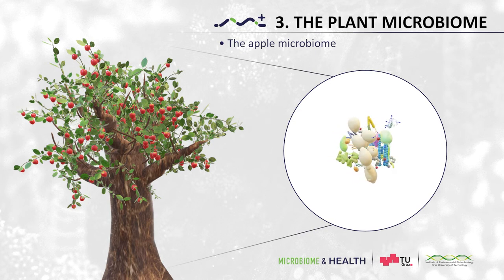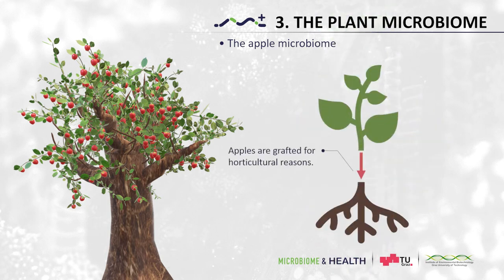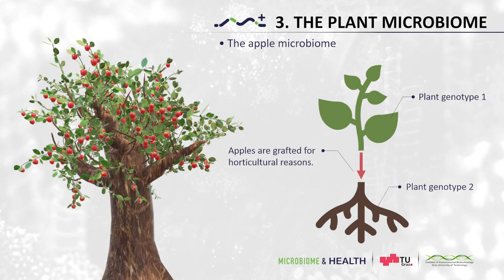However, one important characteristic distinguishes apple and other fruit crops from remaining plants: they are grafted. This means that the shoot of a selected apple cultivar is attached and grown on a specific rootstock. This is done for several horticultural reasons, such as size control, fruit quality and pathogen resistance. For understanding the apple microbiome, grafting is an important factor, since with the rootstock and the grafted shoot, we now have two different plants — two different genotypes — and both play a role in the assembly of the microbiome.